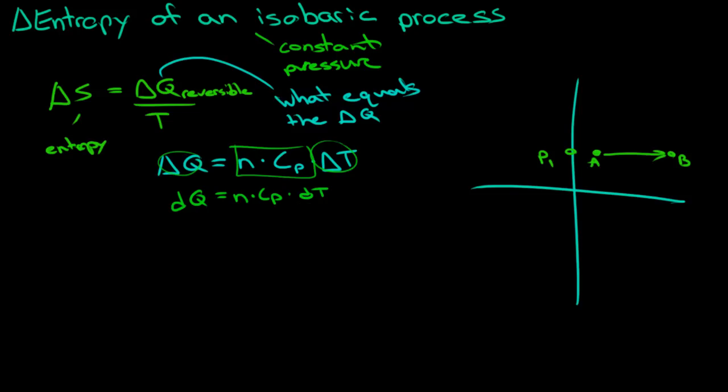Now, if that equals dQ, then we know that dQ over T will equal our change in entropy. So we can rewrite this. This is delta S equals, and we just substitute in what we found for the derivative of Q, which is nCp times dT over T.